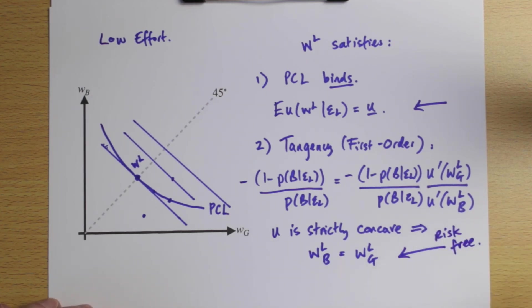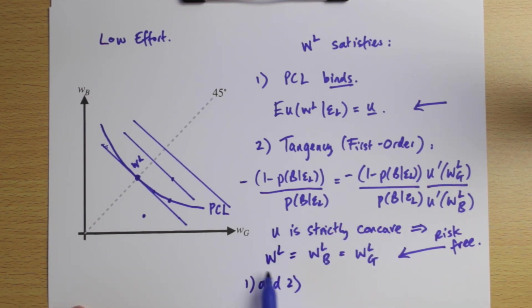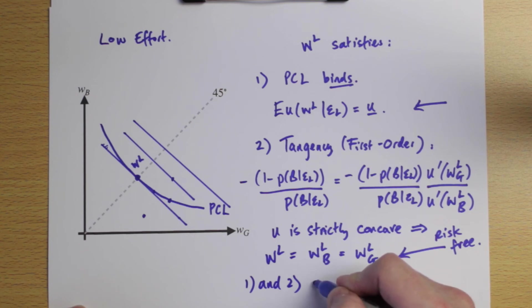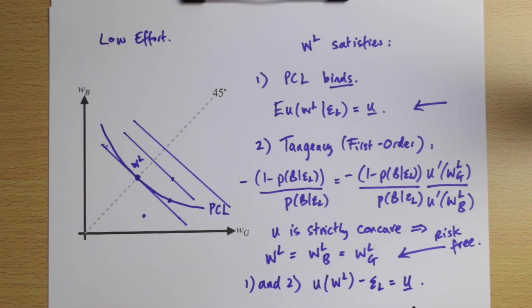So we get two very nice properties: first, the participation constraint binds; second, the employee is offered a risk-free contract. Employees are risk-averse and employers are risk-neutral, so the employer is happy to take as much risk off the employee as possible. Combining these two conditions, letting WL denote the common wage value, we get the simple expression: U(WL) minus the disutility of low effort equals reservation utility. This characterizes the contract that optimally implements a low level of effort.